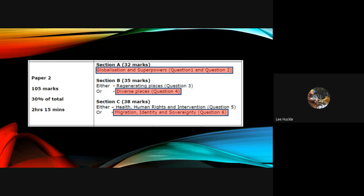Section A is worth 32 marks and this is where they do a combination of units. You'll have question 1 and question 2 in Section A, and it's where they're going to examine you on your globalization unit and your superpowers unit. Section B is worth 35 marks.